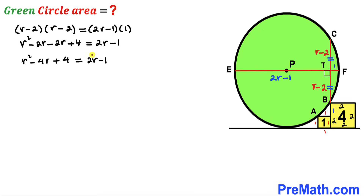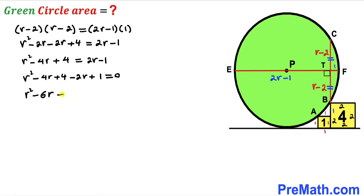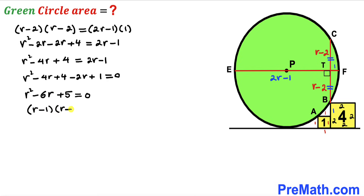Moving all terms to the left-hand side: r squared minus 4r plus 4 minus 2r plus 1 equals 0. Combining like terms gives r squared minus 6r plus 5 equals 0. We now have this quadratic equation to solve.